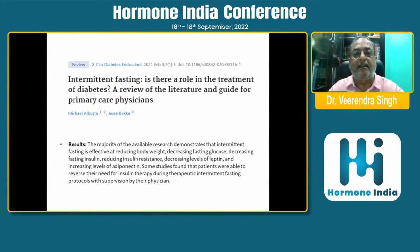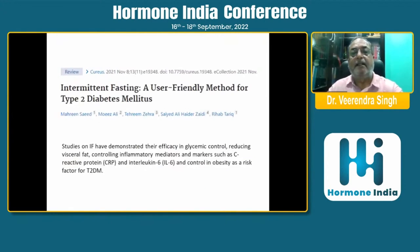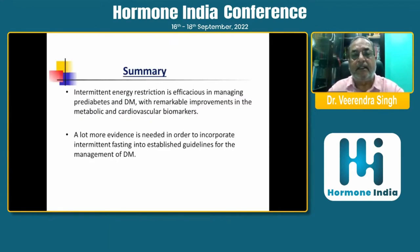Intermittent fasting has a role in the treatment of diabetes. A review of literature and guidelines for primary care shows that the majority of available research demonstrates that intermittent fasting is effective at reducing body weight and decreasing fasting glucose. All forms of fasting reviewed — alternate-day fasting, 5:2, and time-restricted eating — produce mild to moderate weight loss and consistent reduction in energy intake. Studies have demonstrated deficiency in glycemic control, reduction in visceral fat, and control of inflammatory mediators and markers such as CRP and IL-6. To summarize, intermittent energy restriction is efficacious in managing prediabetes and diabetes with remarkable improvements in metabolic and cardiovascular biomarkers. A lot more evidence is needed in order to incorporate intermittent fasting into established guidelines for the management of diabetes.